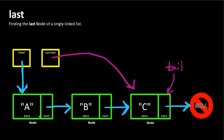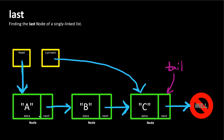We've moved along further in our list, and now current refers to node C. We ask again: is the next property of the current node null? Yes, in this case it is. That means we've found the tail node. Current is now a reference to the tail node, or the last node in our list, so we would return the current node back to the caller.